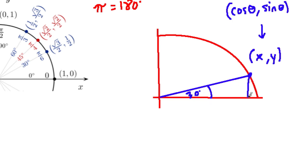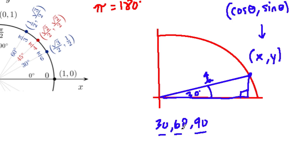We drop a line down and get a right triangle — specifically a 30-60-90 degree right triangle. That has a special property: if the radius is 1, that's the hypotenuse. In a 30-60-90 degree triangle, the leg across from the 30 degree angle is half of the hypotenuse, so it's going to be 1 half. That means our y value is 1 half, so we're already halfway done with this point.